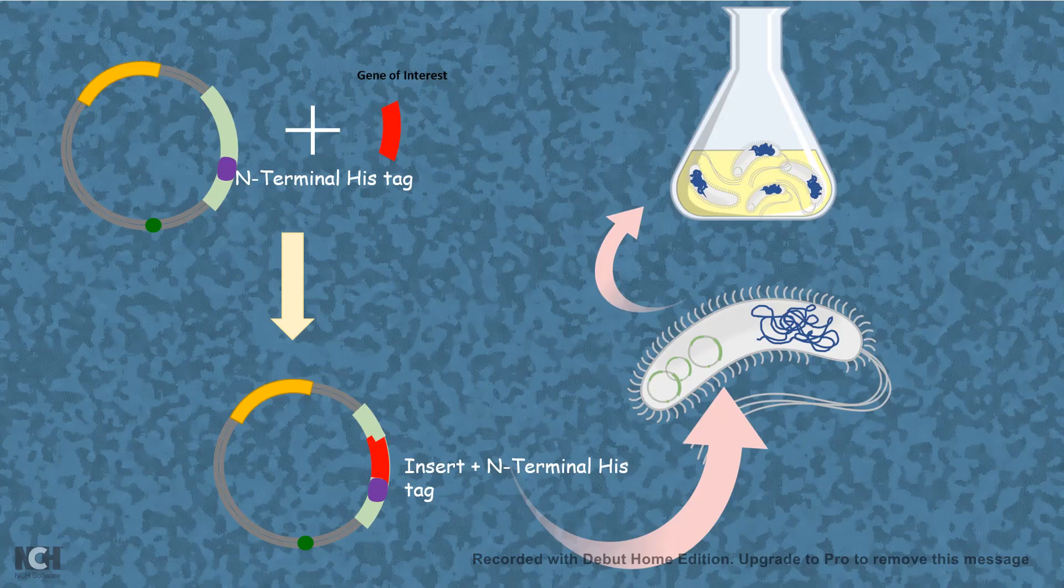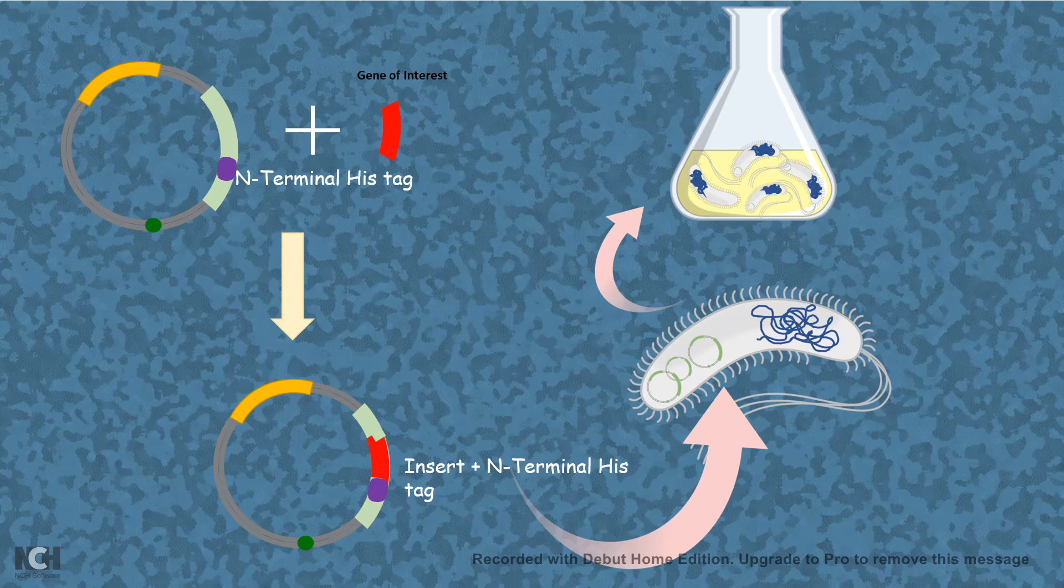Now in case of his-tag protein purification you first clone your gene of interest into a plasmid which has an N-terminal his-tag and this expression vector would express the protein inside the bacteria with a his-tag. And as the bacteria grows you get the bacteria out and smash it and get the lysate, run it through the column to purify your protein of interest. That is how his-tag protein purification works.